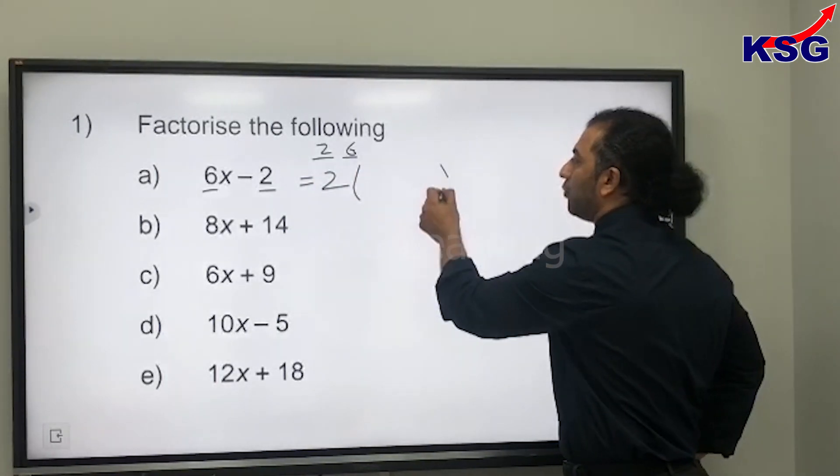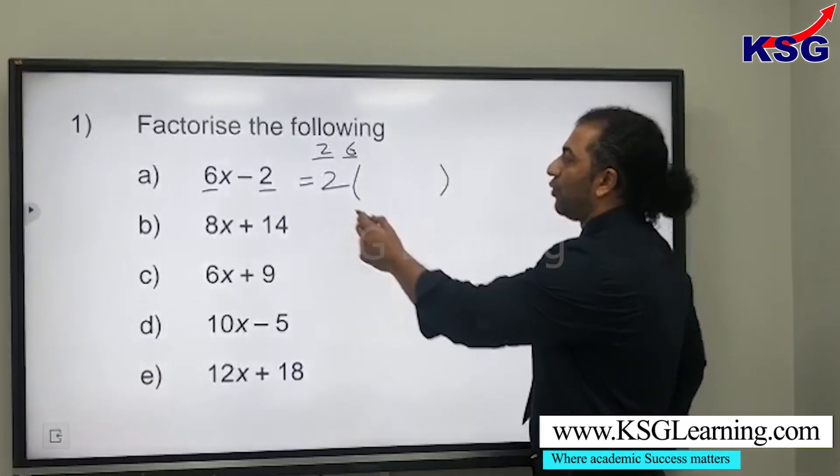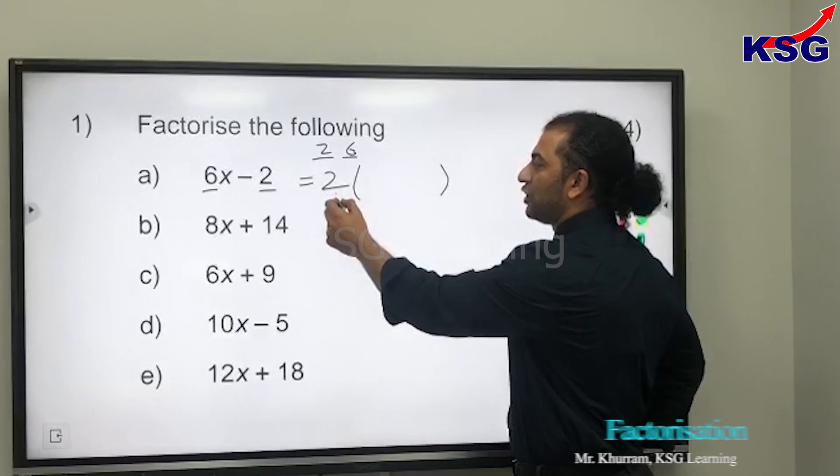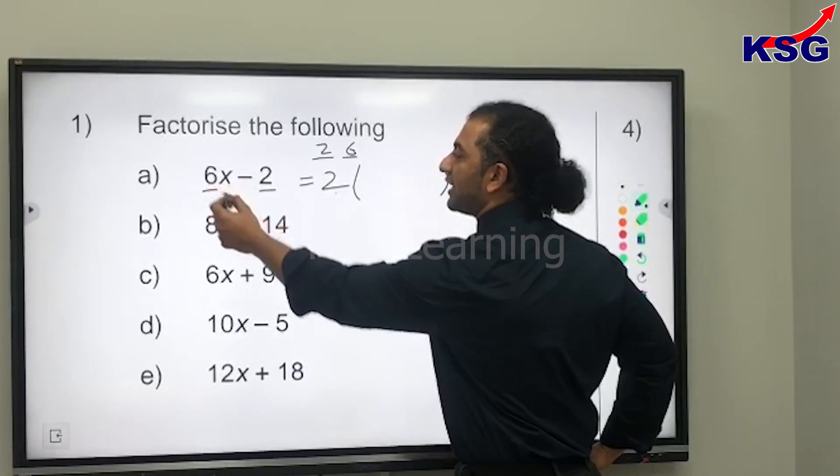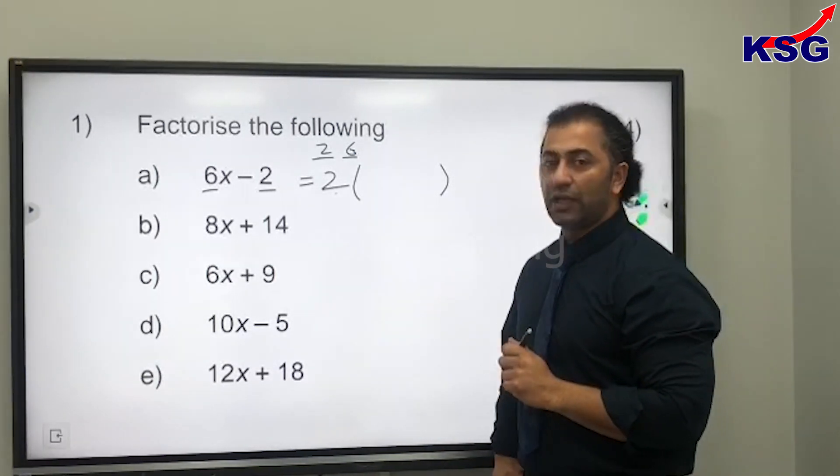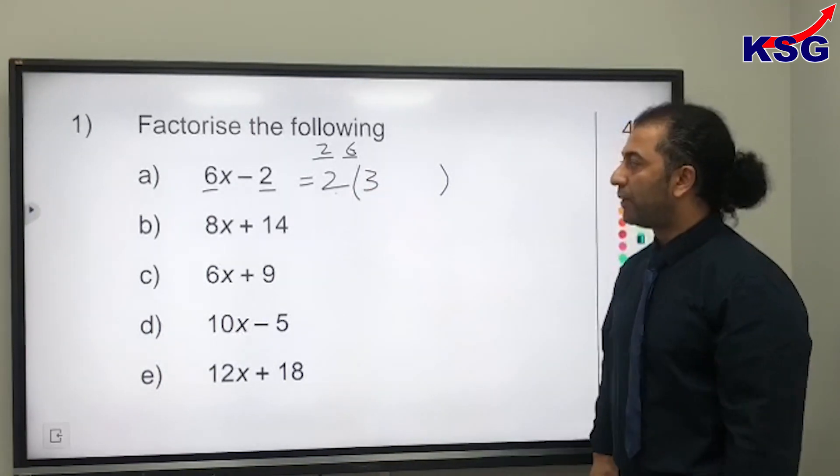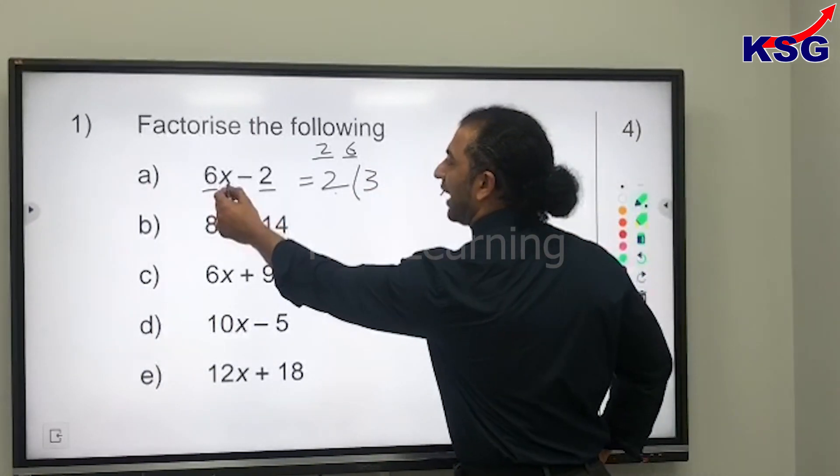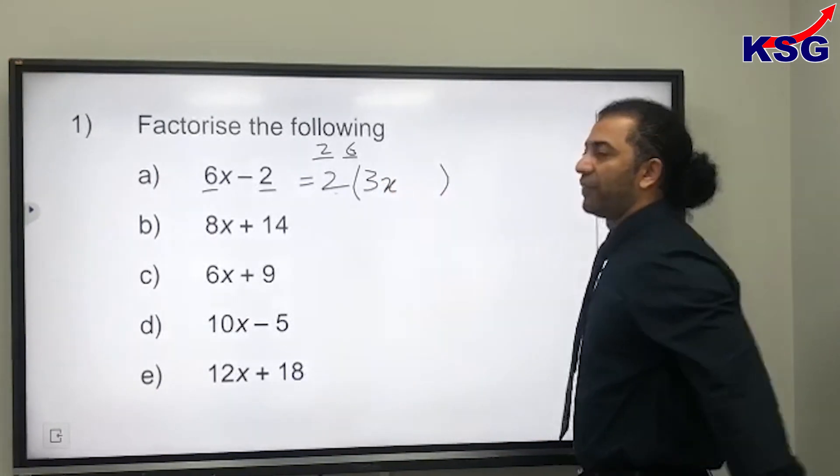Second step: we need to see—what number do we multiply this 2 by so we get 6? Obviously we multiply 2 with 3 to get 6, so we write down in our bracket 3. But this 6 has got x with that, so that x will come with 3x.